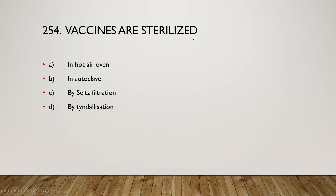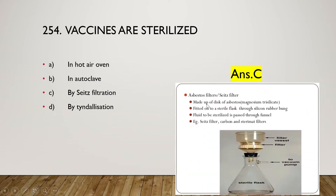The next question: vaccines are sterilized by hot air oven, autoclave, Seitz filter, or Klinderization? The right answer is option C — vaccines are sterilized by Seitz filter filtration. This filter is also known as asbestos filter, made up of discs of asbestos known as magnesium trisilicate, fitted onto a strain flask through a silicon rubber bung, and the fluid to be sterilized is passed through the funnel.